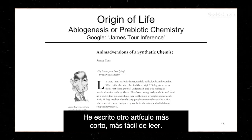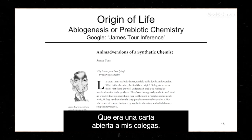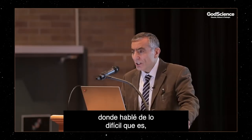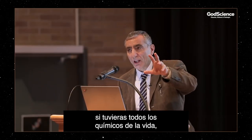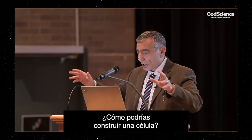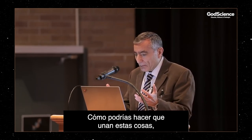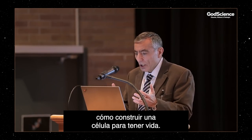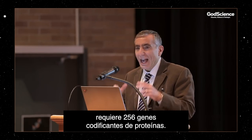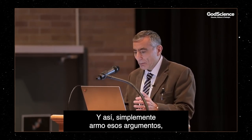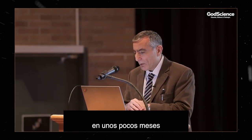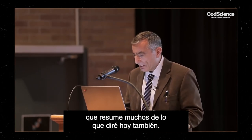I've written another shorter article that's a much easier read, which was an open letter to my colleagues, published about six months ago. I talked about how hard it is, if you had all the chemicals of life, to construct a cell. How would you construct a cell? The simplest cell requires 256 protein-coding genes. So a lot of what I'm saying today you can get from those two articles, and I'm coming out with another article in a few months summarizing many of the things I'll say today.